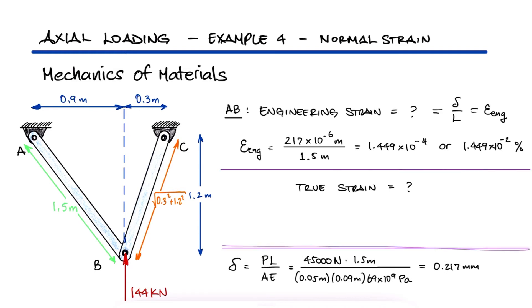Using the expression that we defined for true strain, we notice that first we need to find the current length L. And notice that I'm subtracting delta because during that first main video, we had defined that member AB was subjected to compression.